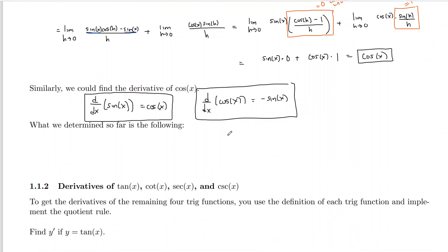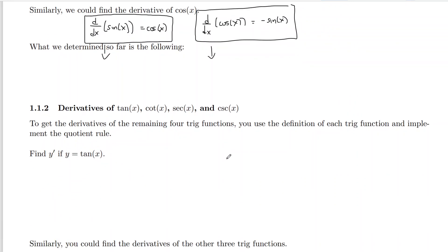We now know the derivative of sine of x and cosine of x, and you really do have to memorize these. There's a pattern I'll show you at the very end, but it's not obvious, so I don't think it's a good idea to worry about it right away. Now that we've got these two, we should get the derivatives of the other four as well before we start doing problems.